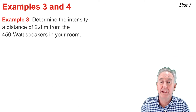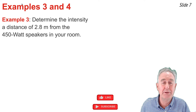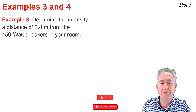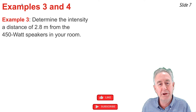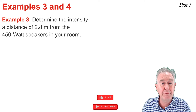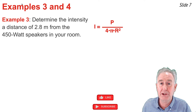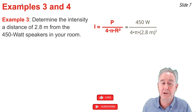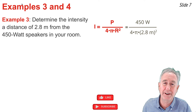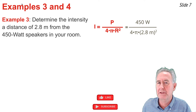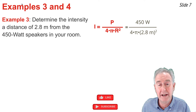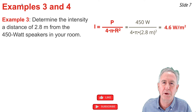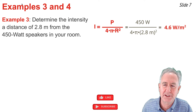In Example 3, we calculate the intensity from a given power and distance from the source. Determine the intensity at a distance of 2.8 meters from 450-watt speakers. I know r = 2.8 and P = 450 watts. Substituting into I = P/(4πr²): put 2.8 meters in the denominator squared and 450 in the numerator. On the calculator: 450 ÷ 4 ÷ π ÷ (2.8²). The result is 4.6 watts per meter squared, rounded to two significant digits.